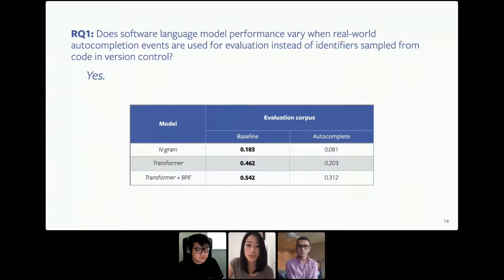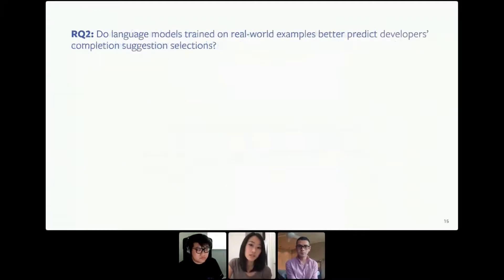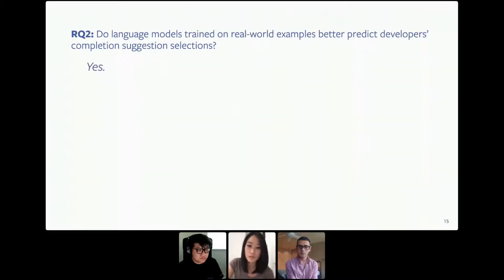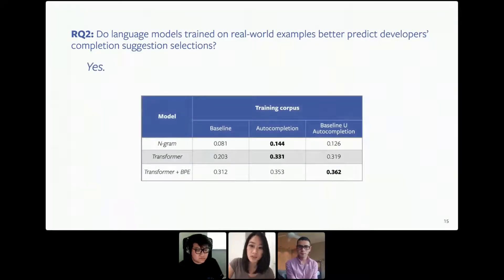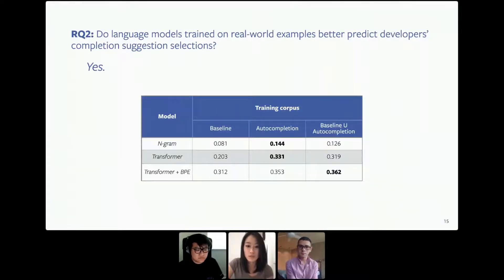So then we asked, how do we perform better on real-world data? This brings us to our second research question: do language models trained on real-world examples better predict developers' completion suggestion selections? The answer again was yes. For all three models, when trained on actual real-world examples, they were able to outperform training on the baseline dataset. One interesting thing to note is that we also combined the baseline and the auto-completion dataset, hoping the neural network might learn better from more training data, but that did not seem to be the case. We believe this may have happened because the benefit of having more training data is overshadowed by the drawback of concept drift from combining the datasets.